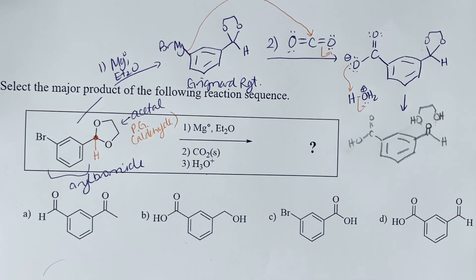So if we're looking for the major product, we're looking for this carbon containing compound. So we're looking for the benzene ring with the carboxylic acid and the aldehyde in a 1-3 relationship to each other. And that is option D.